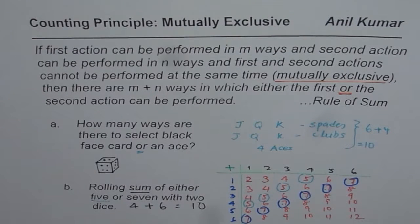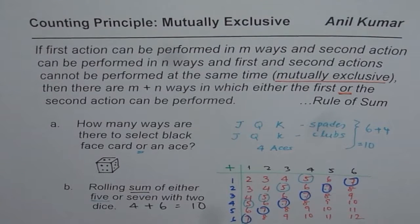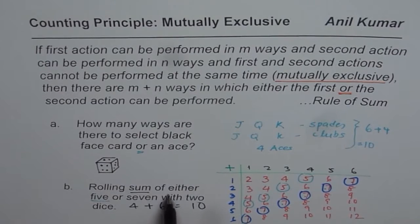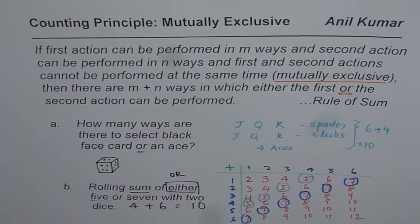The rule of sum is applied in this case because these two events are mutually exclusive. If you get a sum of five, you cannot get seven, and if you get seven, you cannot get five. Therefore they are mutually exclusive. When we want to know in how many ways we get either — and 'either' means 'or' — we add them up. Six plus four is ten. That's the answer.